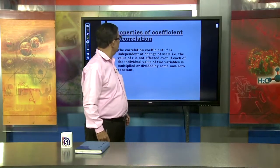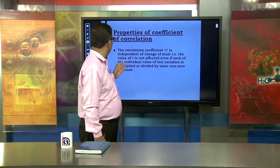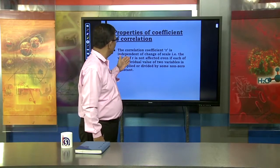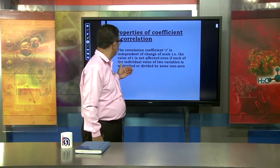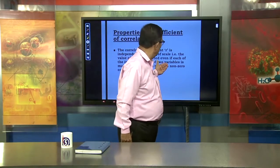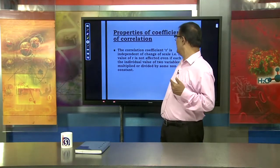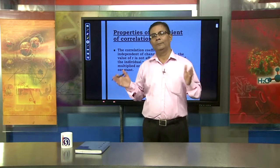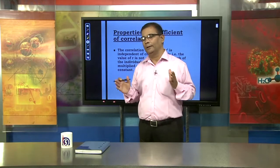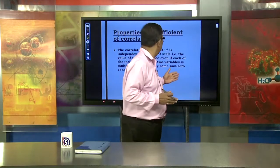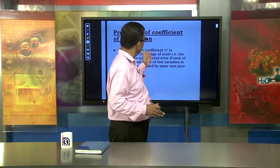The correlation coefficient R is independent of change of scale. The value of R is not affected even if each individual value of the two variables is multiplied or divided by some non-zero constant. Whether we divide or multiply, if we change it in any way, the value of R remains the same. So coefficient R is independent of change of scale.